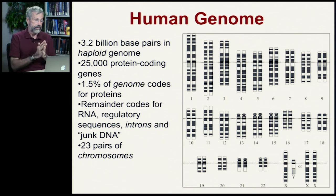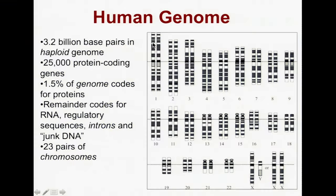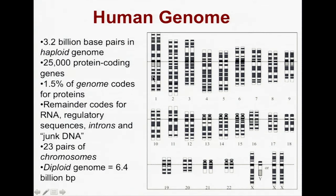Each one of our human cells has 23 pairs of chromosomes. So here's chromosome number 1 — we've got one from mom and one from dad. Our adult bodies are said to be diploid because we've got two copies. The diploid genome of humans is 6.4 billion base pairs, because there's duplication of each one of our haploid chromosomes. This haploid-diploid distinction is a big issue we'll be looking at later today.